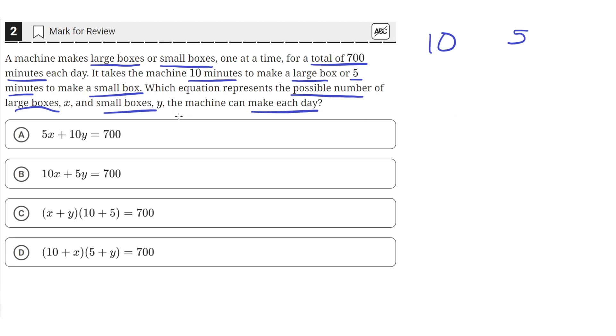And the total number of large boxes is x. So multiplying 10 with x will give us the total amount of time to make all the large boxes. Because the number of large boxes x multiplied with the amount of time it takes to make each large box gives us the total time for large boxes.